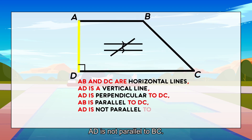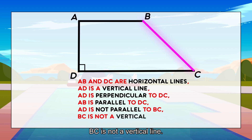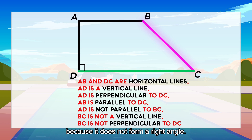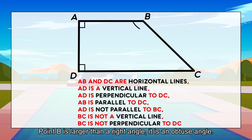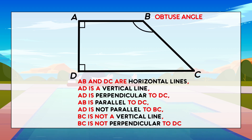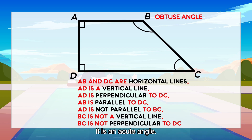A-D is not parallel to B-C. B-C is not a vertical line. B-C is not perpendicular to D-C because it does not form a right angle. Point A and point D form right angles. Point B is larger than a right angle — it is an obtuse angle. Point C is smaller than a right angle — it is an acute angle.